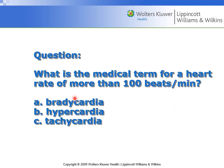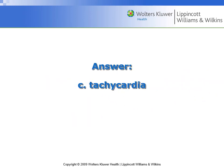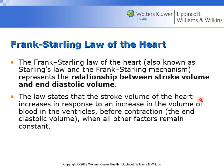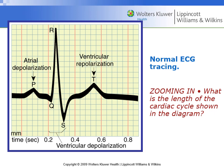The medical term for a heart rate of more than 100 beats per minute is tachycardia — the heart is beating rather quickly. The Frank-Starling law of the heart represents the relationship between stroke volume and end-diastolic volume. It states that the stroke volume of the heart increases in response to an increase in the volume of blood — more blood in the heart, the heart beats faster.